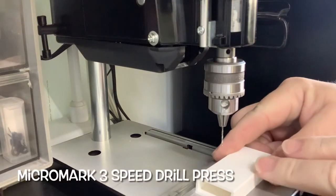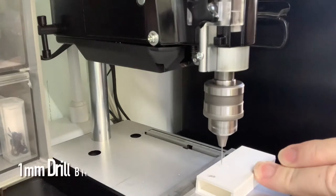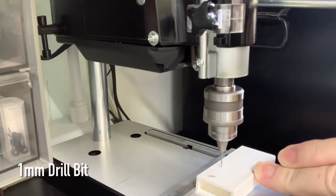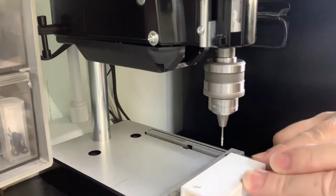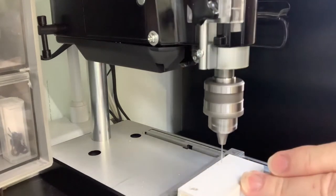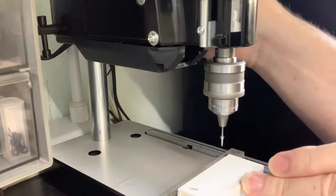This will be a quick video of the Micromark 3-speed drill press model number 81631. I recently purchased it at a pretty cheap Black Friday sale. Just taking it through some initial tests.